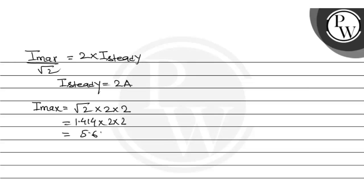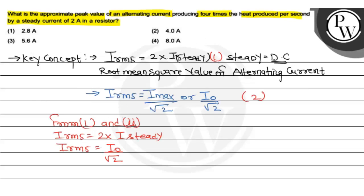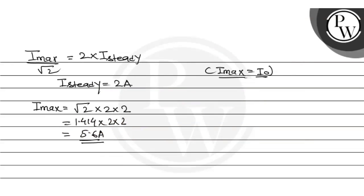So don't be confused - I_max and I_not here, both are the same. Let's check the options. First option incorrect, second option incorrect, third option correct, fourth option incorrect. So the correct option is third. I hope you understood well.